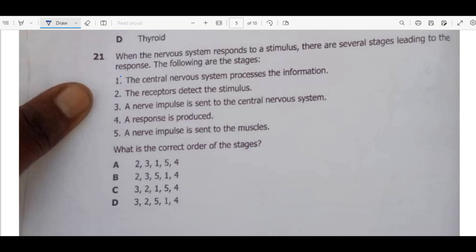Let's have the first question here. When the nervous system responds to a stimulus, a stimulus is anything that can make an organism respond to the environment. There are several stages leading to the response. The following are the stages. Now these stages are not arranged in order, they are not arranged according to the way the whole thing starts until an organism responds to a particular stimulus.